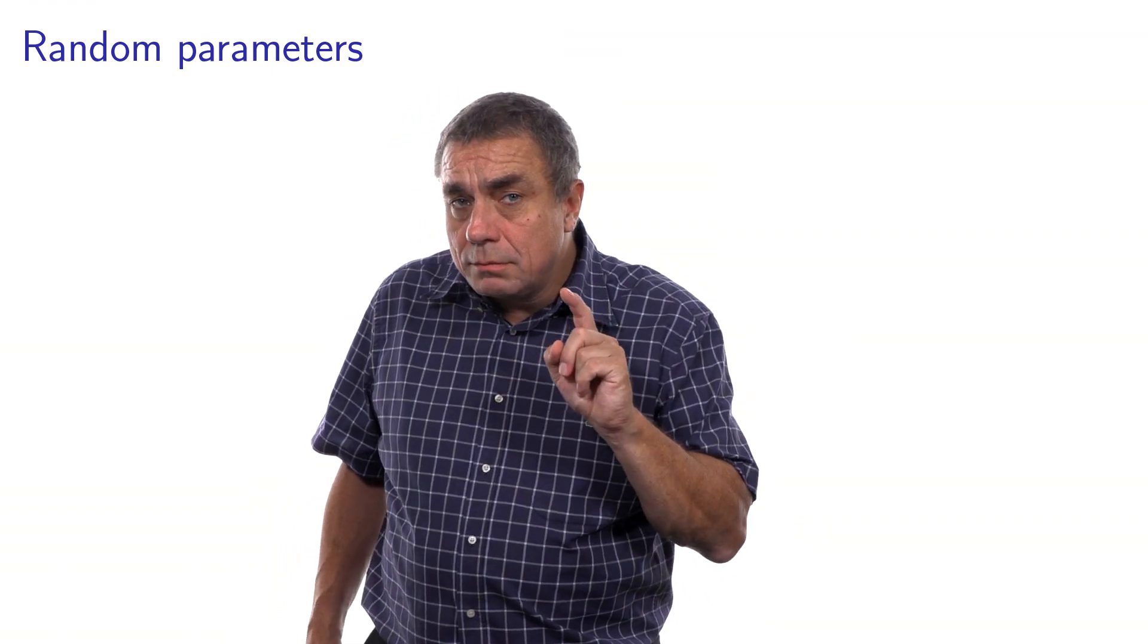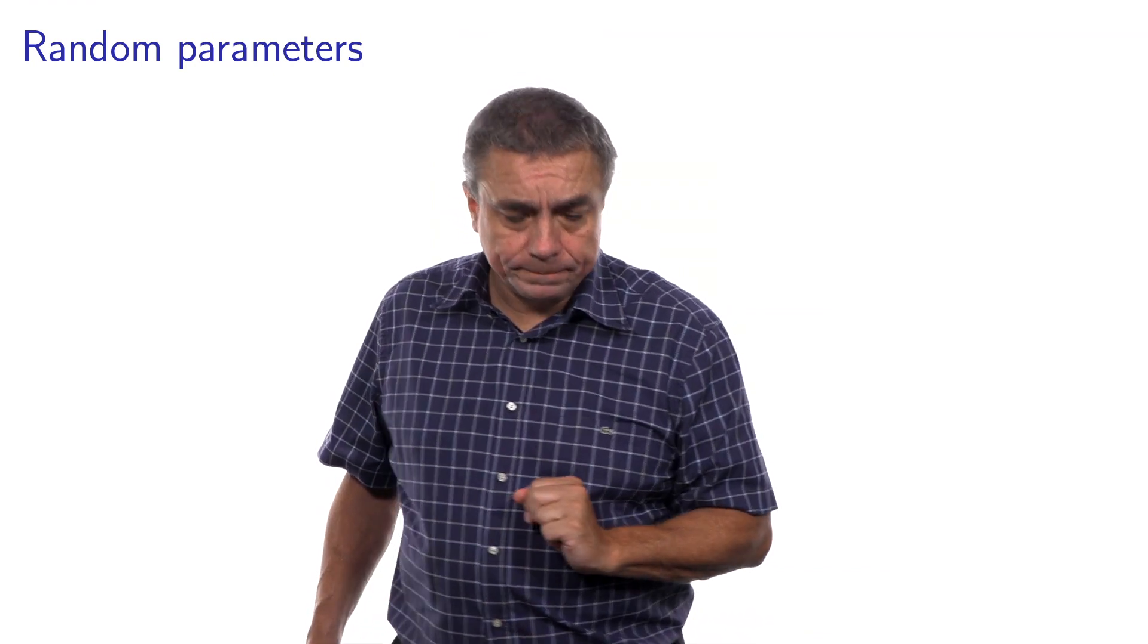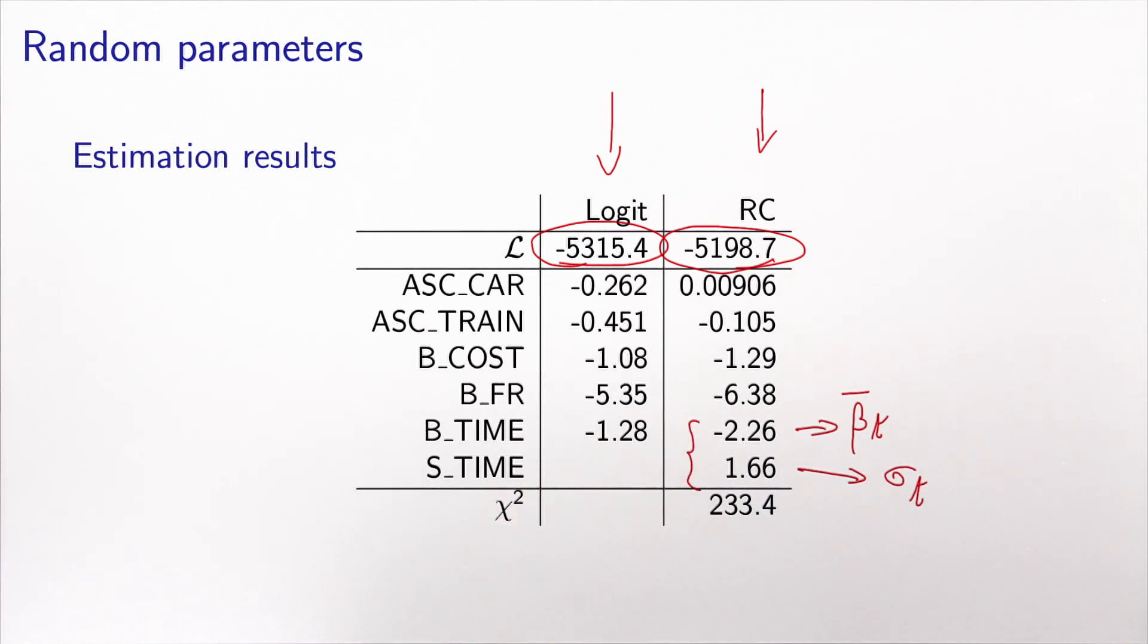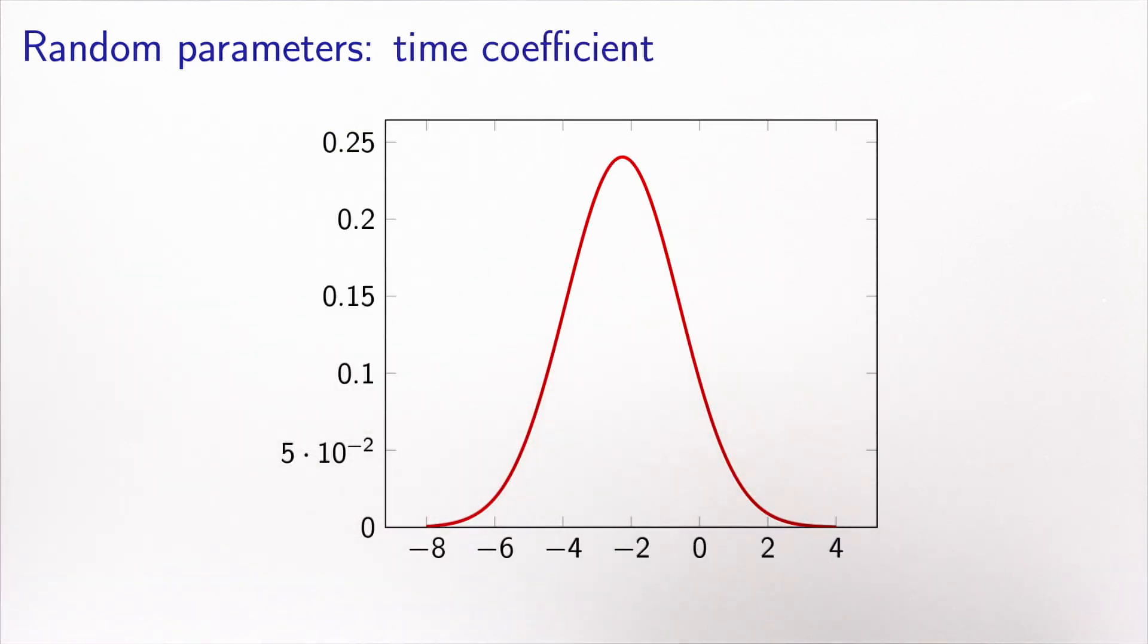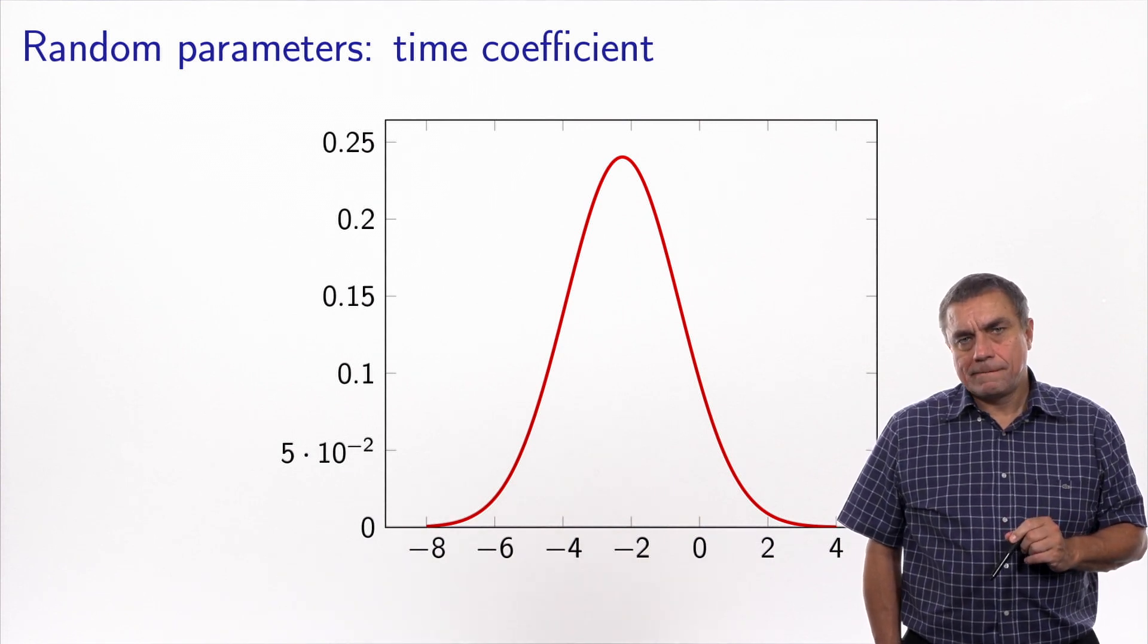But it does not necessarily mean that you have a better model. And let's look more carefully at the results of this model. Actually, I will reject this model. I will not like it. Let's try to understand why. Well, to understand why, we need to look at the estimated results of the distributed coefficient. We have a coefficient, beta_t, which is distributed following a normal distribution, with mean minus 2.26, and variance 1.66 squared. That's what the estimation result provided. So let's plot this distribution to see what it means. This is it. So this is the bell-shaped PDF of the normal distribution for the time coefficient. And there is something that annoys me with this.